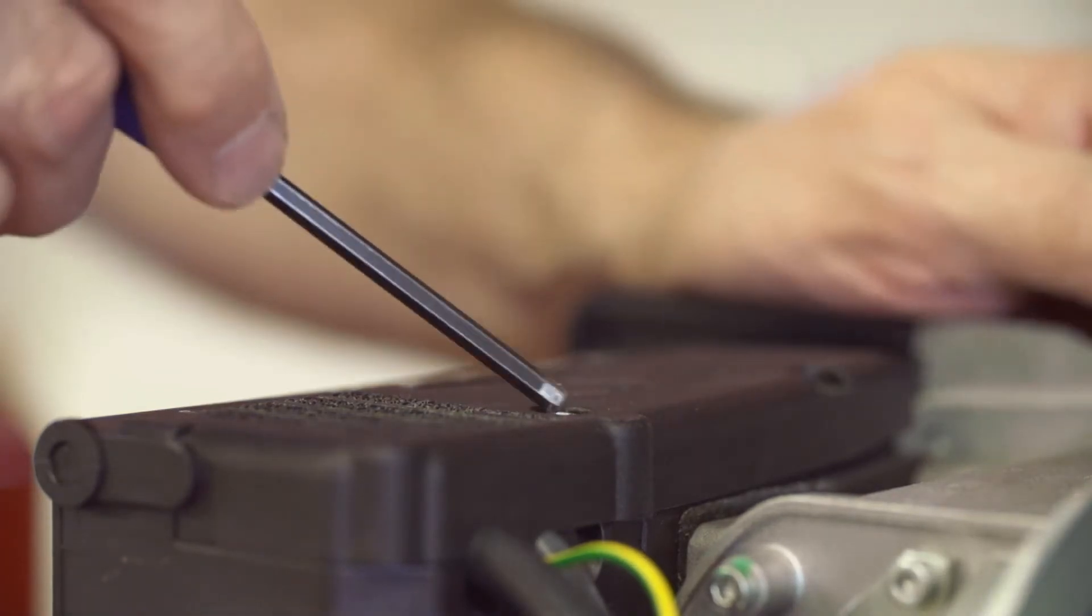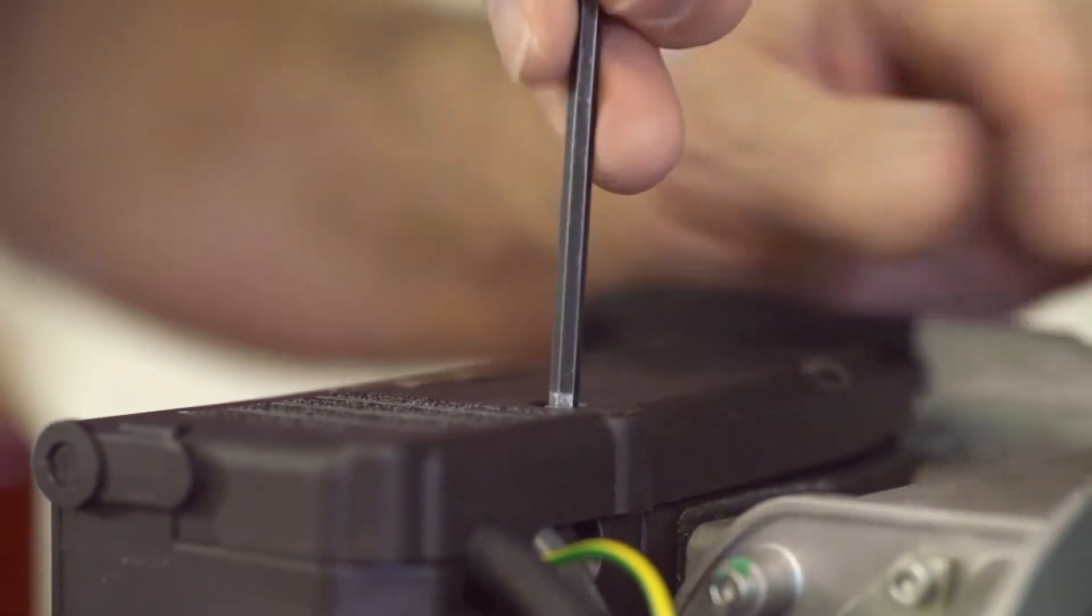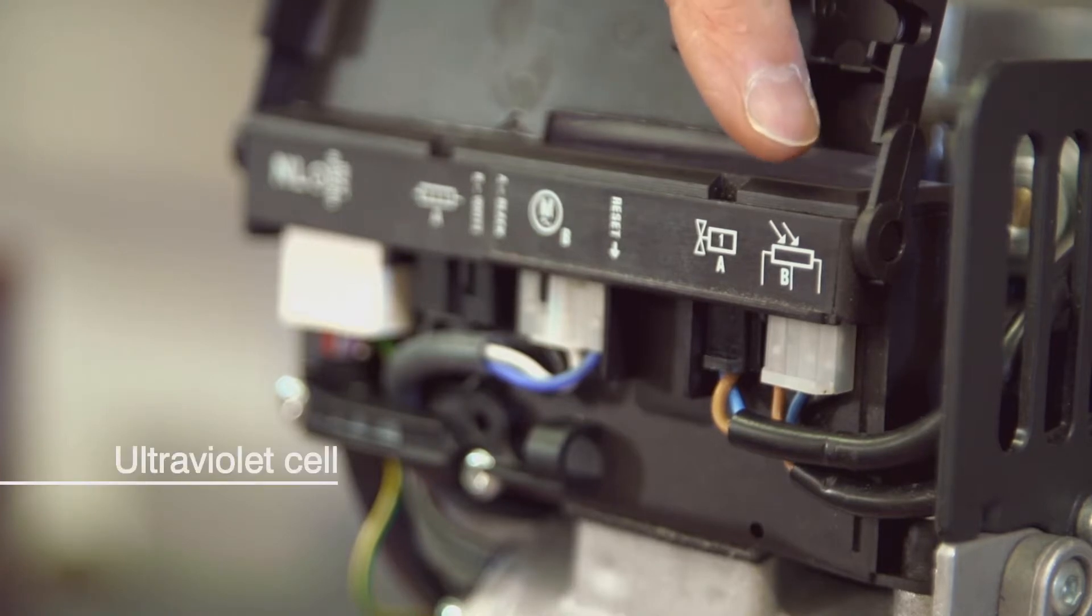Opening up the cover you'll see the connections are very much like the analog box except that the UV cell has a three wire connection.